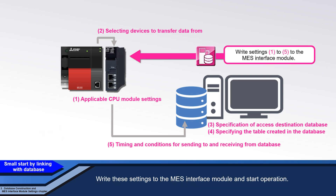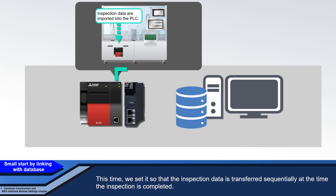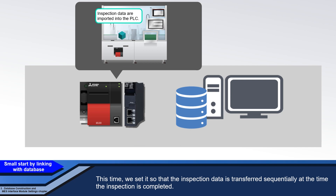Write these settings to the MES Interface Module and start operation. This time, we set it so that the inspection data is transferred sequentially at the time the inspection is completed.